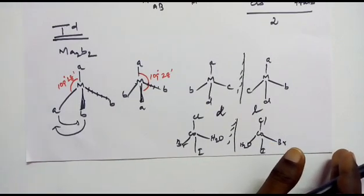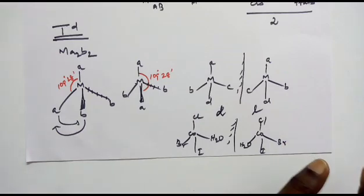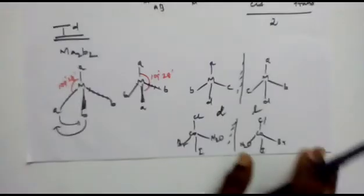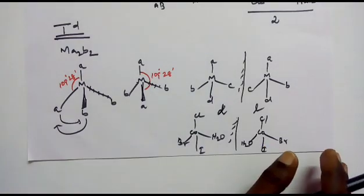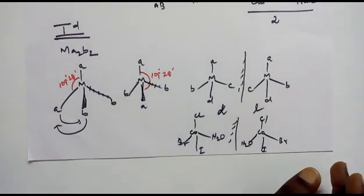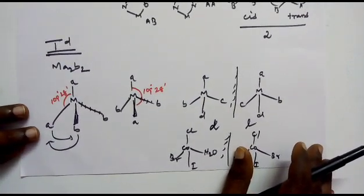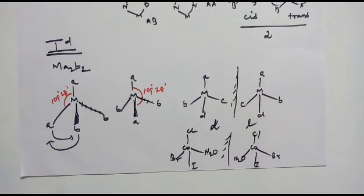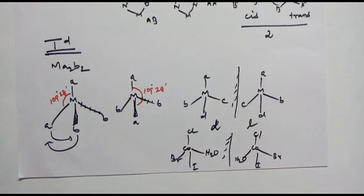So to summarize: tetrahedral complexes exhibit optical isomers but not geometrical isomers. Square planar complexes exhibit geometrical isomers but not optical isomers. We will continue this topic in the next video and study octahedral complexes, followed by some solved questions. If you have any queries and comments, write in the comment box. Wish you all the best. Thank you very much.